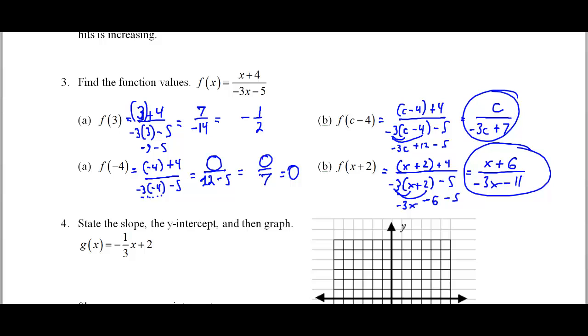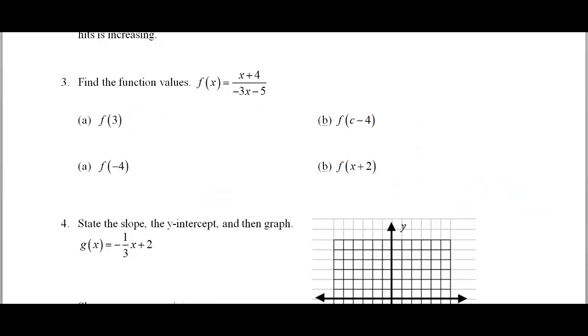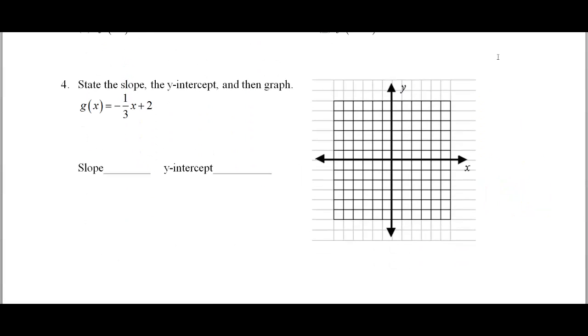Alright, so for our last problem on this page here, let us go and scroll down to state the slope and Y-intercept here and graph it. So the slope. The slope is the number in front of X. So the slope is negative one-thirds. The slope has no X. Do not put an X here. That's the slope. No X in slope.